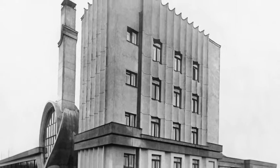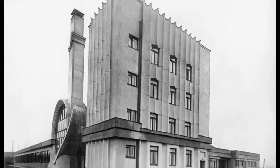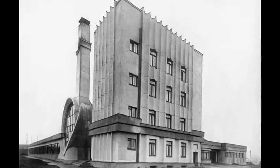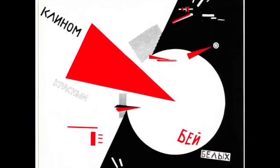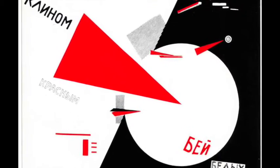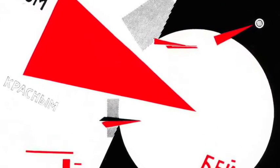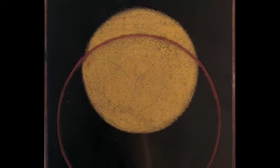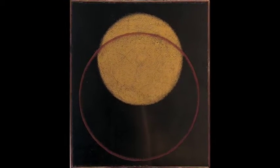The most famous work of Tatlin is the Monument to the Third International, also known as Tatlin's Tower. It was designed for the headquarters of the Third International. Was it to be realized, it would have been the tallest structure in the world, surpassing the height of the Eiffel Tower. It would have also been more appealing to the constructivists as it was functional rather than being monumental and decorated.